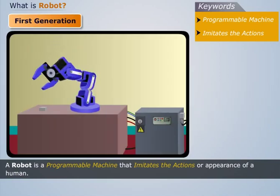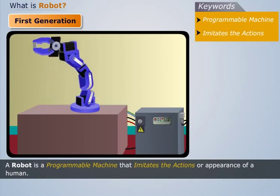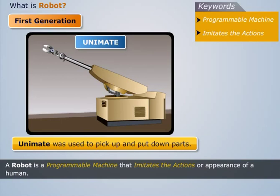Robots were used to weld, spray paint, move heavy objects, handle hot materials, etc. The first industrial robot was online in a General Motors automobile factory in New Jersey in the year 1961. It was called Unimate. It was used to pick up and put down parts.